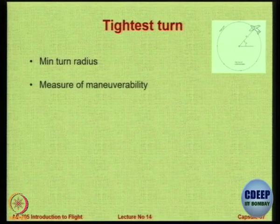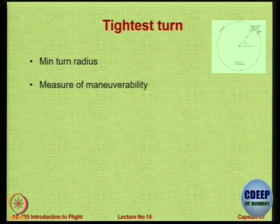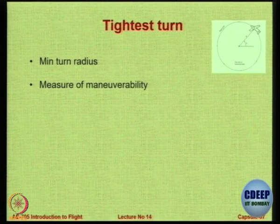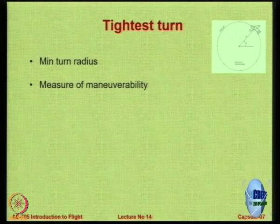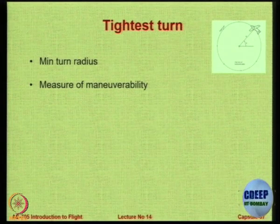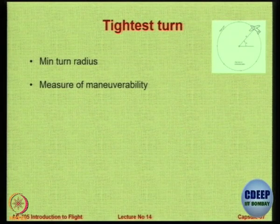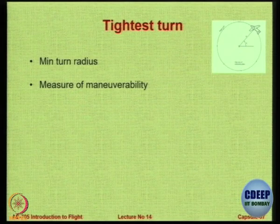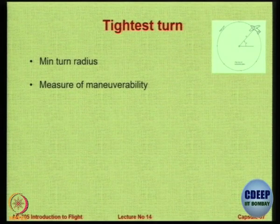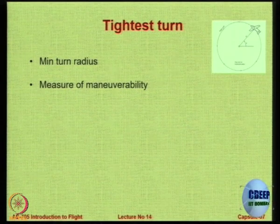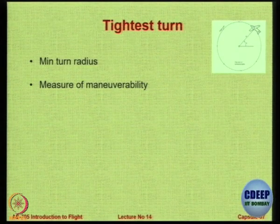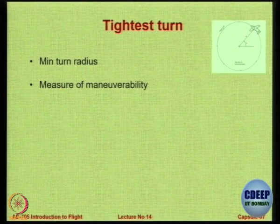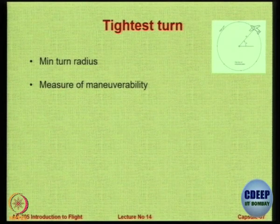The tightest turn refers to achieving the minimum turn radius. Applications for a military aircraft include returning after completing a task, or avoiding an obstacle such as a mountain ahead at high speed — in that case you want the shortest turn radius to avoid the obstacle, not the fastest rate.